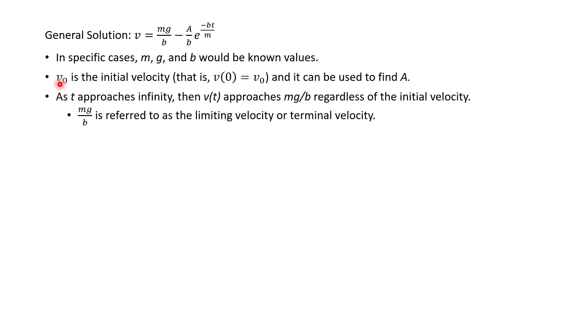So v sub zero, or v naught, is the initial velocity. It's what you get at time zero. And if you know that value, if it's given, you can actually use that to find a.